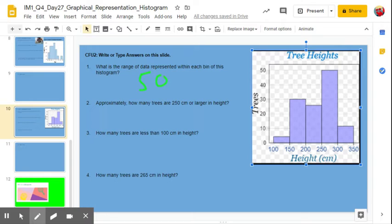Approximately how many trees are 250 centimeters or larger in height? Okay. So which bins are we talking about? 250 or larger? So here's 250 to 299. Here's 300 to 349. So we're talking about these two bins.